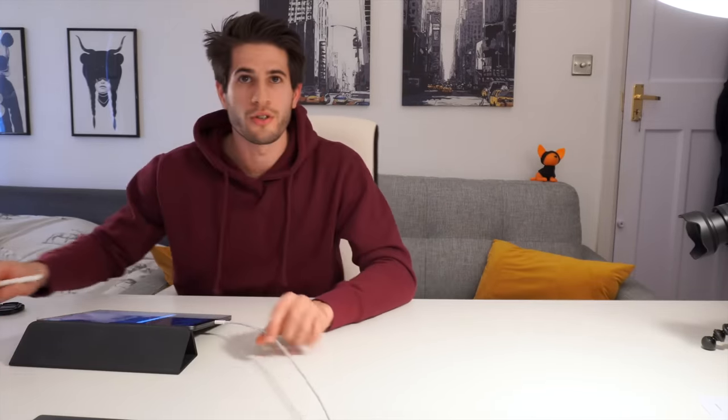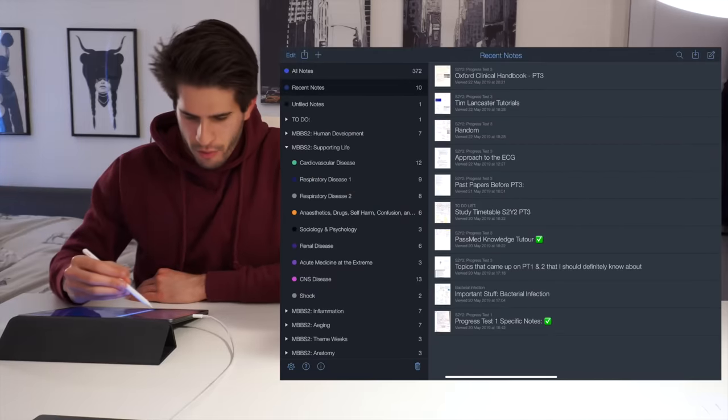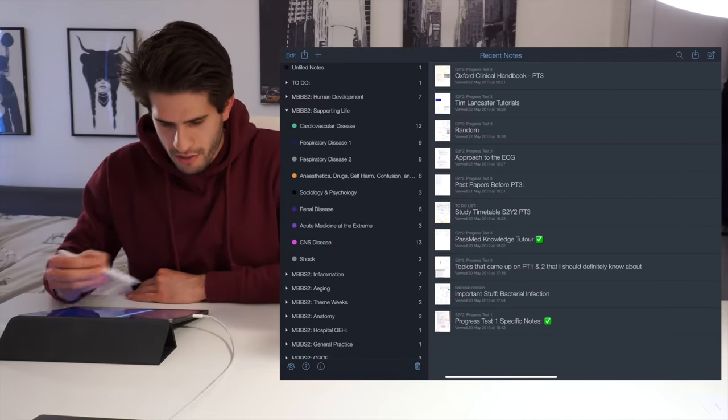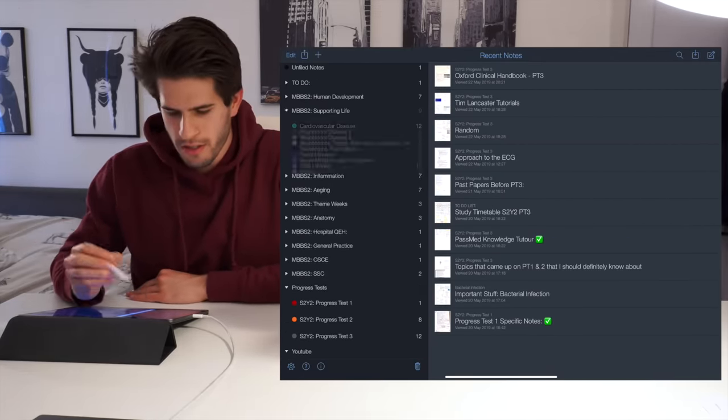All right so let me move to the side so that you guys can see everything that I'm doing on screen. First things first let's start off with what is over here on the left side of my screen. These are what are called dividers in Notability.